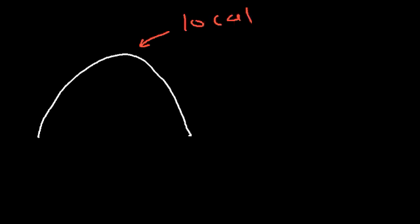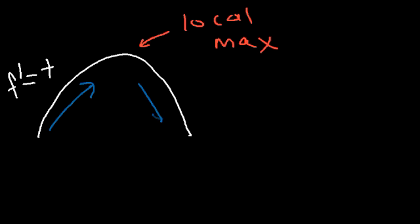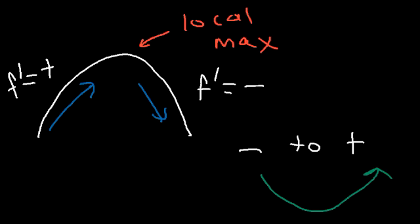Here we have a local max, or a relative maximum. Notice that the first derivative to the left is positive — it's increasing, and then it decreases. So anytime the first derivative changes from positive to negative, you have a local max. If it changes from negative to positive, that means the function is decreasing then increasing, and so you have a local minimum.